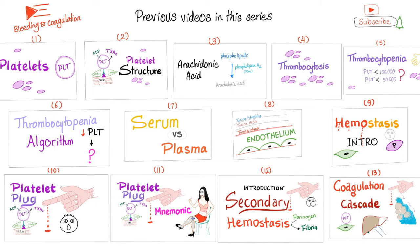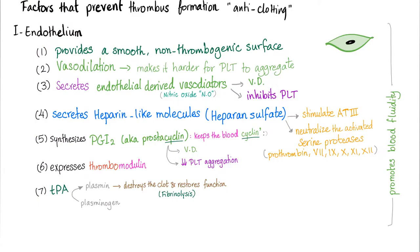Here are my previous videos about bleeding and coagulation, especially this one — you must watch, it was really awesome. This is Medicosis Perfectionalis, where medicine just makes perfect sense. So, why don't you just thrombose and die? What are the factors that prevent thrombus formation, also known as anti-clotting mechanisms?